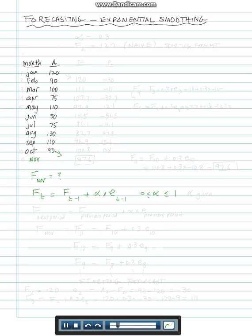If alpha is 0, that's just the previous forecast. If alpha is 1, that would be the naive. Translating into words: Ft for the next period equals Ft the previous period plus this alpha number multiplied by the error of the previous period.